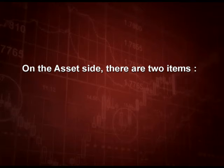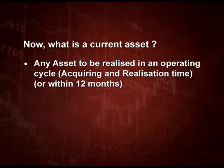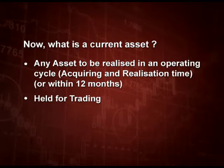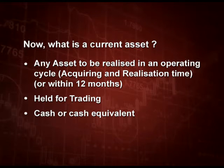There are two asset categories: non-current assets and current assets. A current asset is any asset to be realized in an operating cycle. The operating cycle is the time from acquiring to realizing an asset; if nothing is specified, it is taken as 12 months. An asset realized within the operating cycle is current, as is any asset held for trading or any cash or cash equivalent.